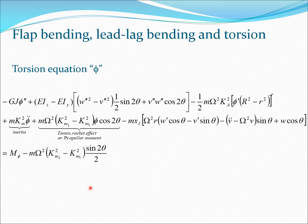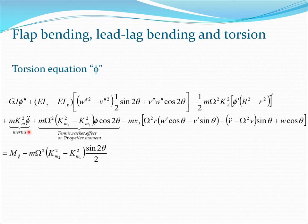Looking at the torsion equation: the basic flexural stiffness term is -GJ·φ'', phi being torsion, and the basic inertia term is m·k_m²·φ̈. The remaining terms come from coupling — the presence of theta, the tennis racket effect or propeller moment, and certain non-linearities. On the right-hand side is essentially the forcing function plus one more term due to the difference between k_m2² and k_m1².